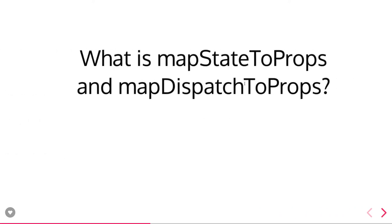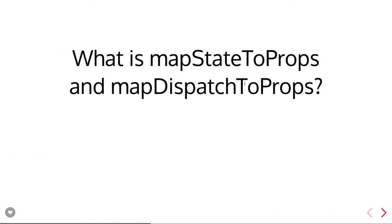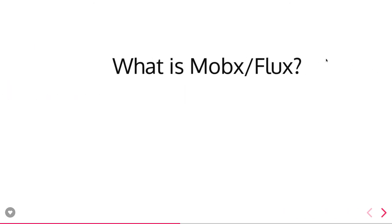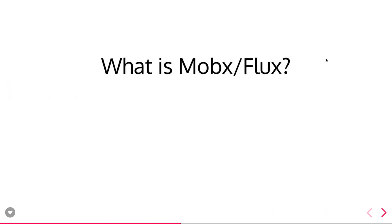What are mapStateToProps and mapDispatchToProps? These two methods are the way to access state from the Redux library or trigger actions to Redux. mapDispatchToProps helps us trigger actions to Redux, and mapStateToProps helps us capture the state from the Redux library. Both methods are provided by the React Redux library, and in the connect function we just pass them to capture state and trigger actions to Redux.